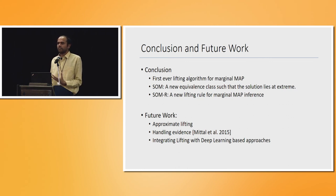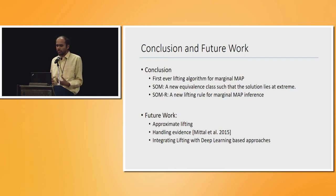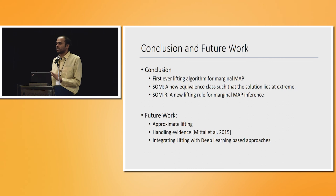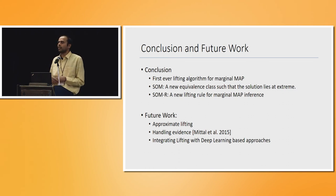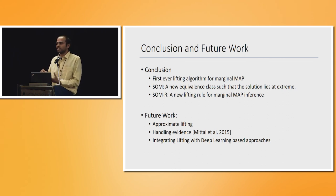To conclude: the two key ideas presented are the extrema property and the first lifting algorithm for marginal MAP inference. Future directions include approximate lifting, handling evidence — we currently assume no evidence — and more generally, applying these techniques combined with deep learning where a CRF sits at the end of the deep learning model.